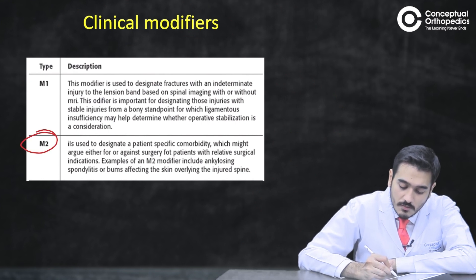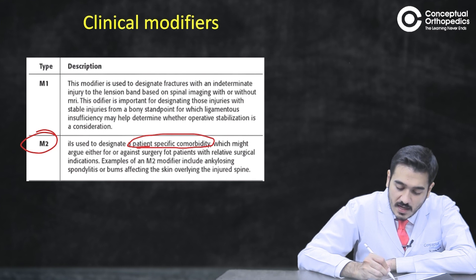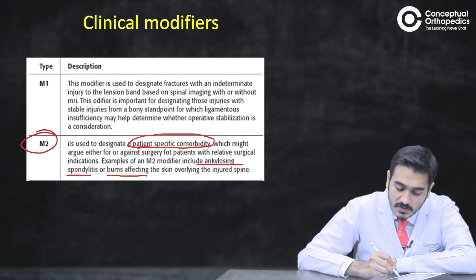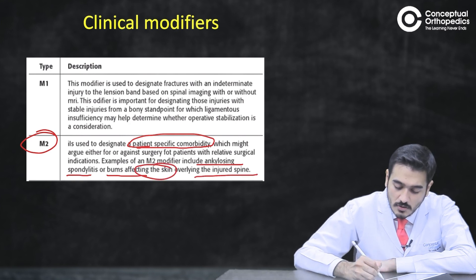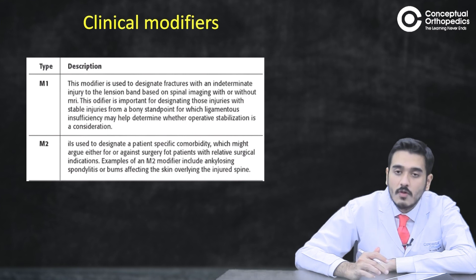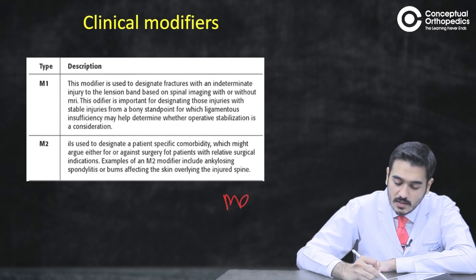M2 is a modifier denoting any specific comorbidity the patient has. For example, if the patient has ankylosing spondylitis, or there are burns affecting the skin over the injured spine, we use the modifier M2, because this is going to impact management.